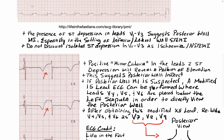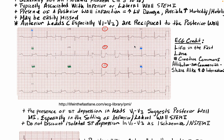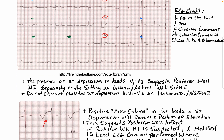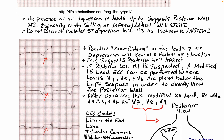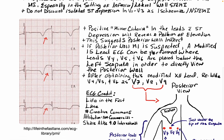The presence of ST depression in leads V1 through V3 suggests posterior wall MI, especially in the setting of an infralateral STEMI. As you can see here, we have a very classic presentation with ST elevation in the inferior leads and a little bit of elevation in the lateral leads as well. You could easily imagine no ST segment anomalies in all of those leads, and still have this depression in V1, V2, V3 combined with signs and symptoms of an acute coronary syndrome — that by itself would be powerful evidence of a myocardial infarction. Do not discount isolated ST depression in leads V1 through V3 as just ischemia or NSTEMI that doesn't need to go to the cath lab.